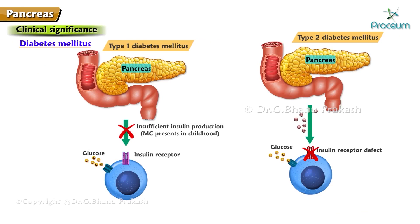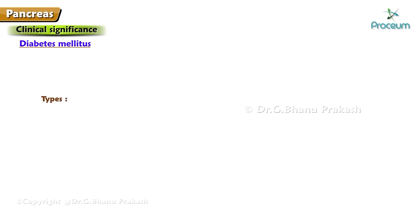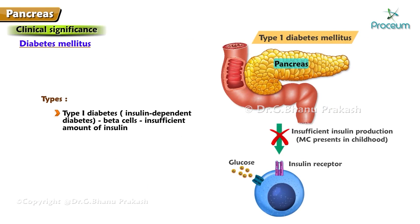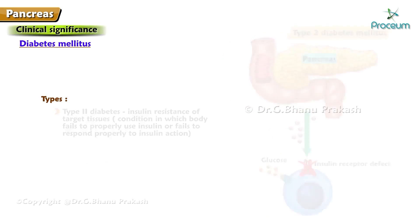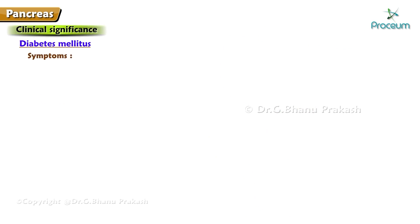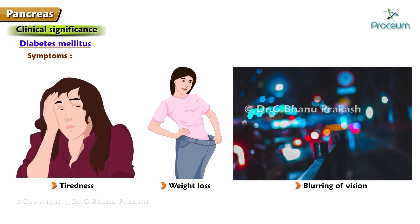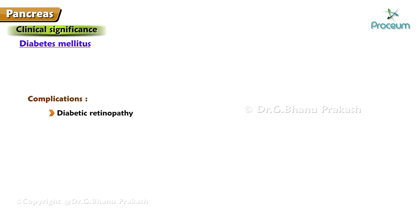Diabetes mellitus is characterized by hyperglycemia caused by inadequate production or inadequate action of insulin on body tissues. Type 1 diabetes (insulin-dependent) involves the pancreatic beta cells producing an insufficient amount of insulin. Type 2 diabetes results from insulin resistance of target tissues, where the body fails to properly use or respond to insulin. Symptoms include polyuria, polydipsia, urinary tract infections, tiredness, weight loss, and blurring of vision. Complications include diabetic retinopathy, neuropathy, kidney failure, heart disease, stroke, and limb disease.